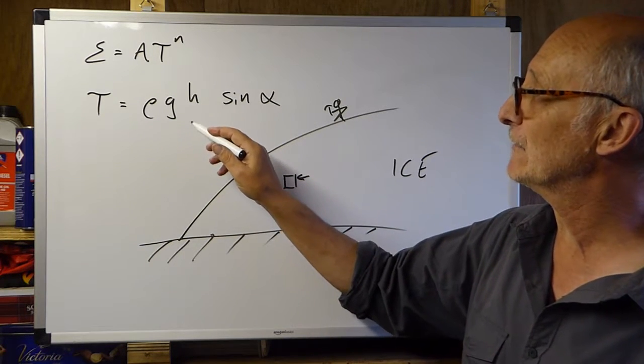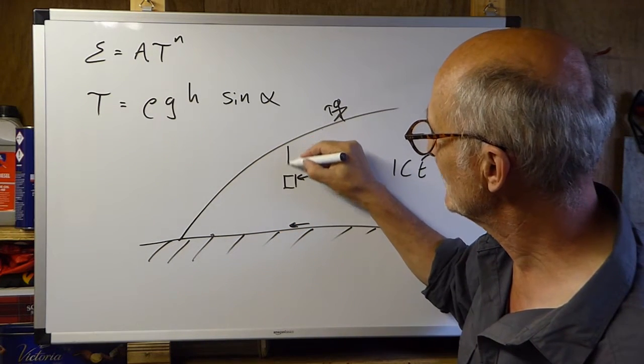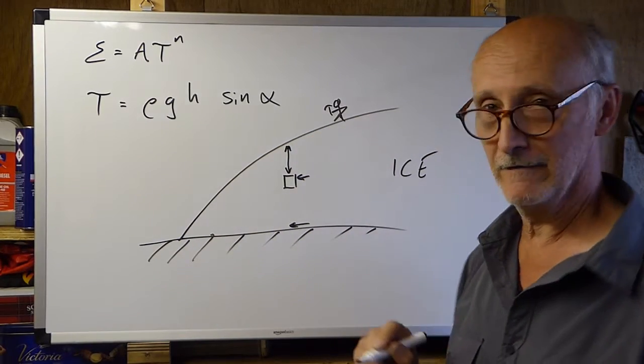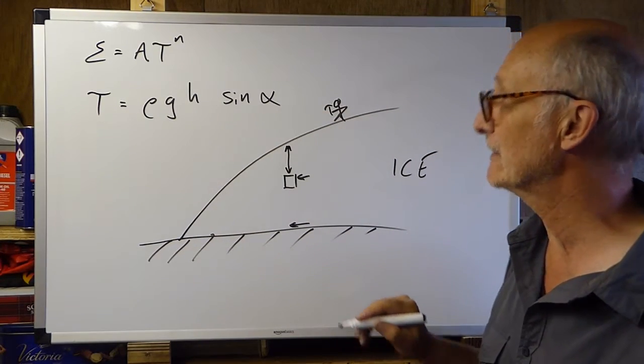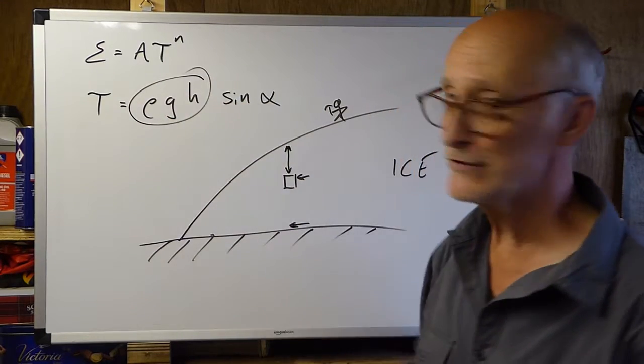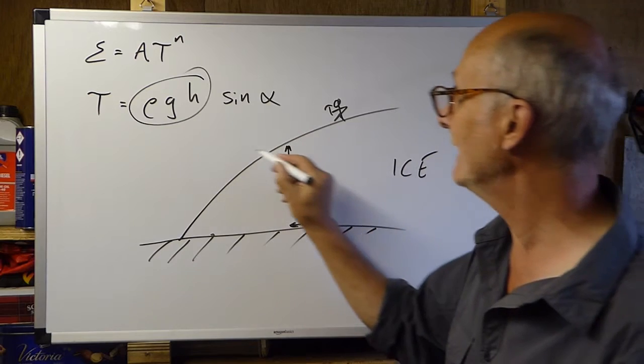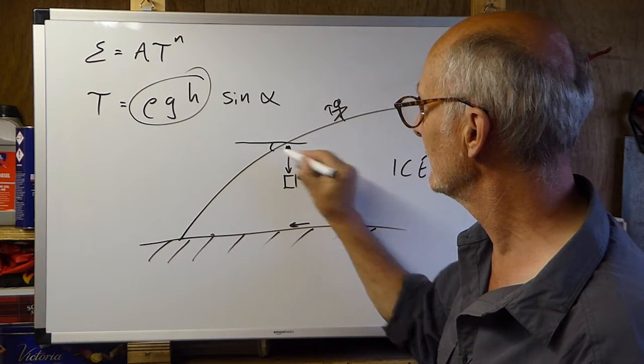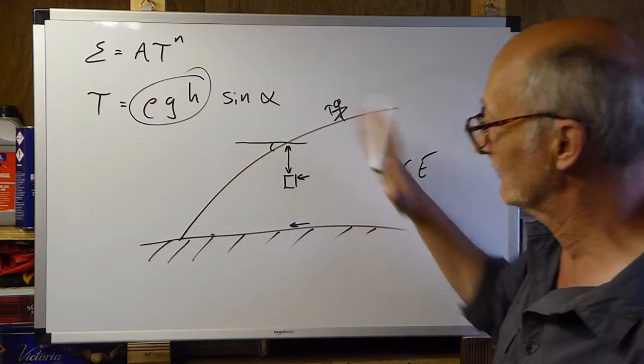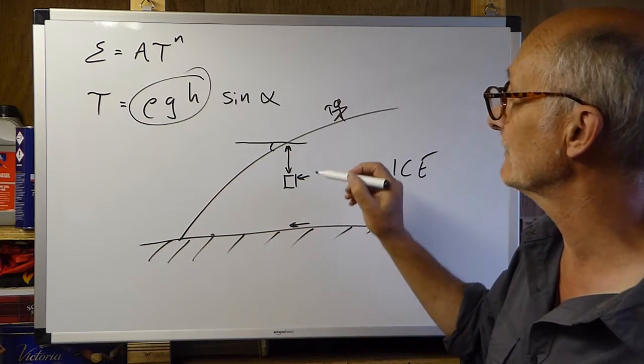So, tau equals rho g h sine alpha. Rho is the density of ice, g is the force of gravity, and h is the thickness of ice bearing down on that point that we're interested in. So, like we said before, rho g h is essentially the weight of the ice on that point. Alpha is the gradient of the ice surface. It's that gradient which is driving the forward motion.